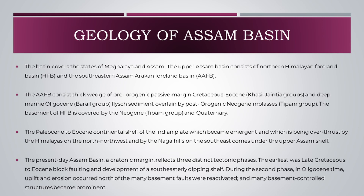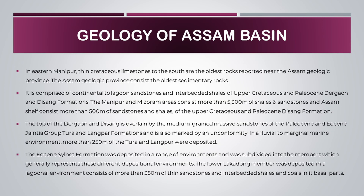The Paleocene to Eocene continental shelf of the Indian Plate, which became emergent and is being overthrusted by the Himalayas on the north-northwest and by the Naga Hills on the southeast, comes under the Upper Assam shelf. The present-day Assam Basin, a cratonic margin, reflects three distinct tectonic phases: the earliest was Late Cretaceous to Eocene block faulting and development of a southeasterly dipping shelf; during the second phase in Oligocene time, uplift and erosion occurred north, many basement faults were reactivated, and basement-controlled structures became prominent. In eastern Manipur, thin Cretaceous limestones to the south are the oldest rocks reported near the Assam Geologic Province.